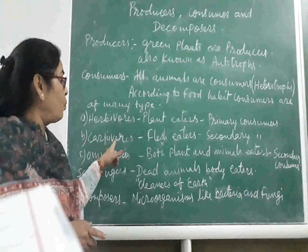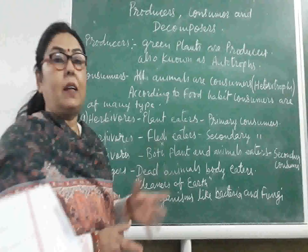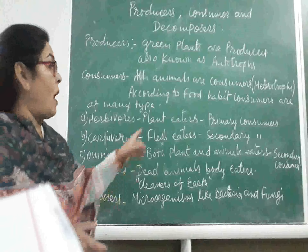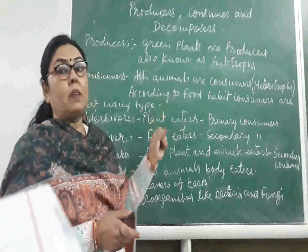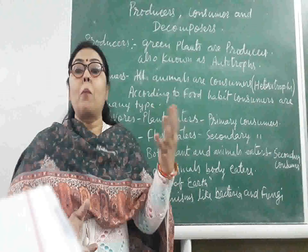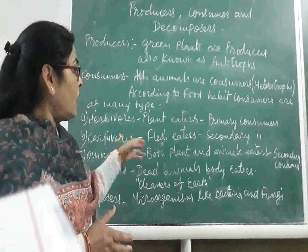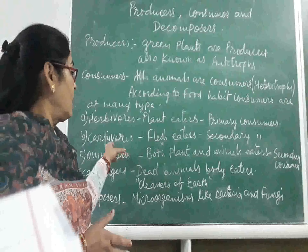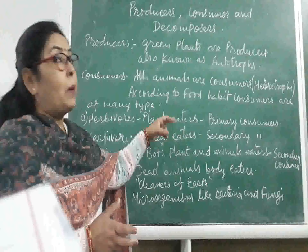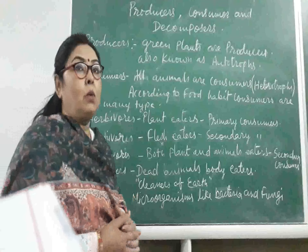Carnivores — 'carni' means flesh, 'vores' means eaters, so flesh eaters are called carnivores. These are secondary consumers. Herbivores are called primary consumers because they eat the producers, and secondary consumers are the carnivores which eat the primary consumers.